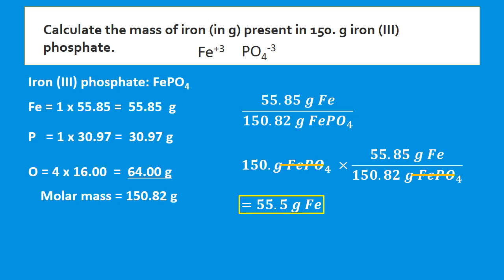This takes us to the end of percent composition. Remember: percent means out of 100. To find the percent composition of a compound, find its molar mass or formula mass, then divide the mass of each component by the total mass times 100. That takes us to the end of percent composition. Until next time — blessings.